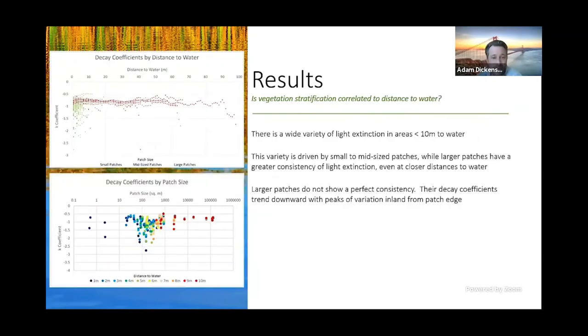And finally, is vegetation stratification correlated to distance to water? So here, again, I'm plotting the light decay coefficients and we see that there's a wide variety of light extinction rates in areas less than 10 meters to water. But we also see that this variety of light extinction rates is being driven by small to mid-sized patches specifically. Large patches have a greater consistency in their light extinction rates. And while light extinction in larger patches is more consistent, it's not perfectly consistent. In other words, light decay coefficients in larger patches trend downward, but they do have these inland peaks of variation.